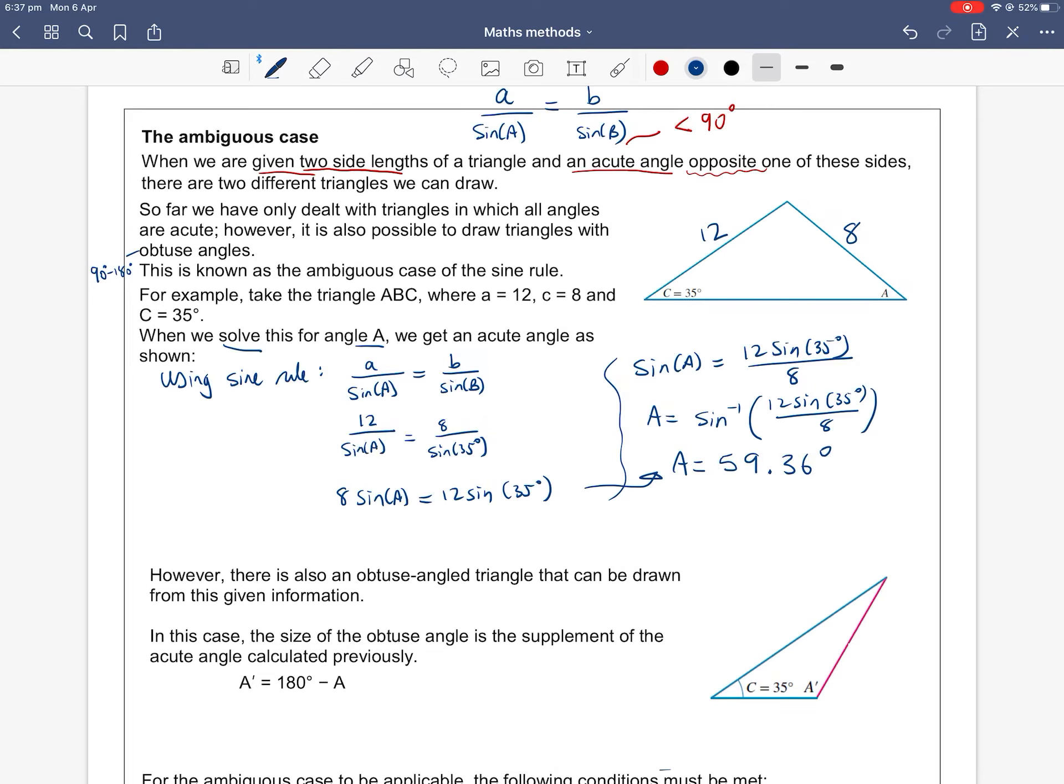So using a calculator, A is approximately 59.36 degrees. So that makes sense. In our diagram here, this angle A does look to be less than 90 degrees to join up the three sides of a triangle. So we've calculated this acute angle A to be 59.36 degrees.